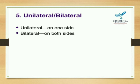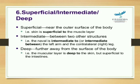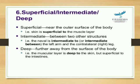Unilateral means one side; bilateral means on both sides. Superficial means near the outer surface of the body — for example, skin is superficial to the muscle layer. Deep means farther away from the surface of the body — the muscular layer is deep to the skin but superficial to the intestine. Intermediate means between superficial and deep structures — for example, the navel is intermediate to the left arm and the contralateral right leg.